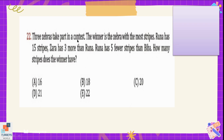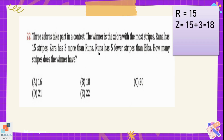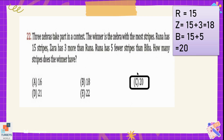Question number 22: 3 zebras take part in a contest, and the winner is the zebra with the most stripes. Runa has 15 stripes. Zara has 3 more than Runa, so Zara has 18 stripes. Biba has 5 more stripes than Runa, so Biba has 20 stripes. The winner will have 20 stripes — option C.